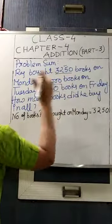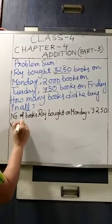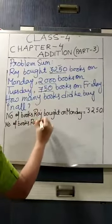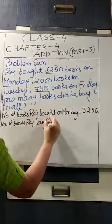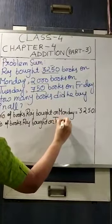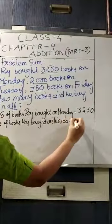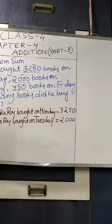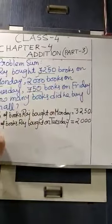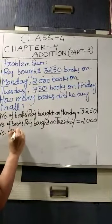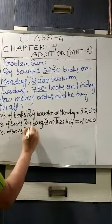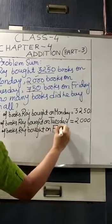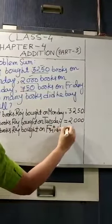Next, 2000 books on Tuesday. Number of books Raj bought on Tuesday — 2000. So you have to write 2000. Next statement is on Friday. Number of books Raj bought on Friday — 750.